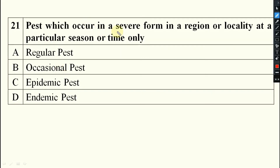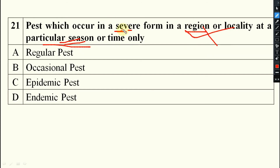Pest which occurs in a severe form in a region or locality at a particular season — epidemic means severely in a particular time, endemic means regularly in a particular area. Here, severe and particular season are mentioned. So this will be your epidemic pest.